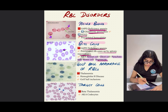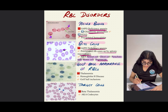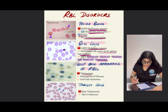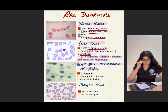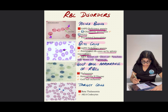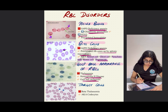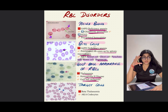The next one is golf ball appearance, which is seen in thalassemia. When you see golf ball appearance, it is known as hemoglobin H disease, which has golf ball inclusions. The RBCs have inclusions that give them a dotted appearance which looks like a golf ball.